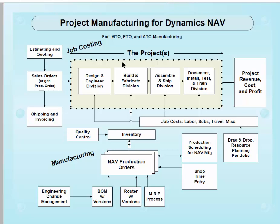You might break this project down into sub-jobs: a sub-job for design and engineering, a sub-job for fabrication, one for assemble and shipping, and one for installation and customer training. Each of these sub-jobs will have labor costs, subcontract costs, travel costs, and individual material costs — whether used during installation, testing, or early in the design and engineering process.